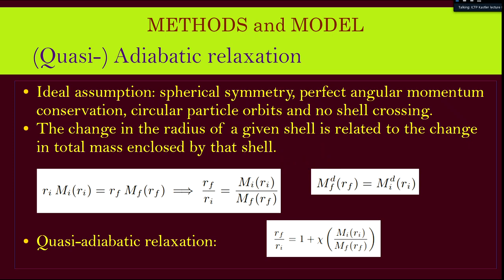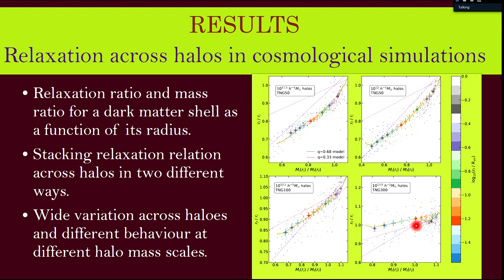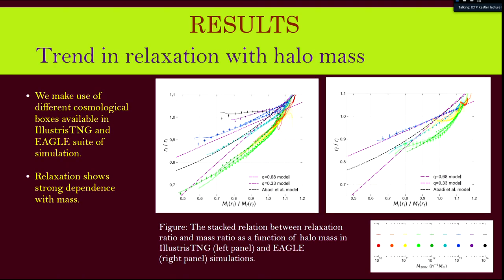Generalizing such adiabatic relaxation models gives a relaxation relation of the form R_f/R_i as a function of mass ratio. When we extract this relaxation relation from IllustrisTNG and EAGLE hydrodynamical simulations, we find wide variation in the relaxation relation with mass — from cluster-scale halos (10^14 h^-1 M_sun) to very dwarf galaxy halos. Even at fixed mass there is wide variation between individual halos, though there is a strong mass-dependent trend in the average behavior.